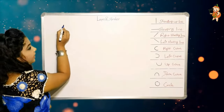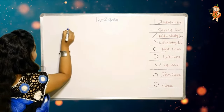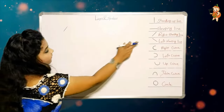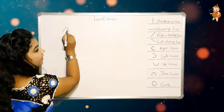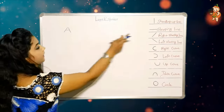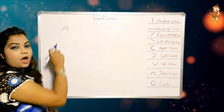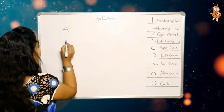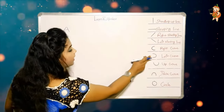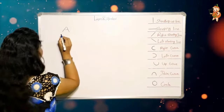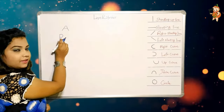This is an A — one right slanting line, one left slanting line, and one sleeping line make A. Now how to make B? One standing up line, one left curve, and another left curve.